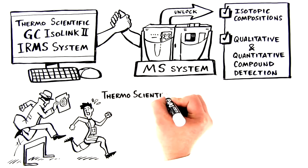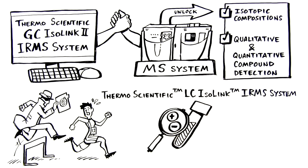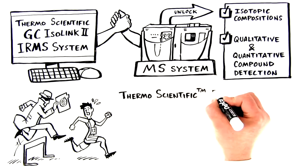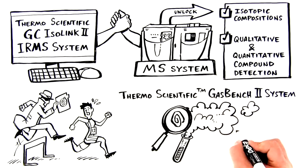The thermoscientific LC-ISOLINK-IRMS system for analyzing polar compounds within a sample. And the thermoscientific GAS BENCH-2 system for the analysis of gas samples evolved from bulk materials.